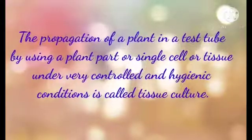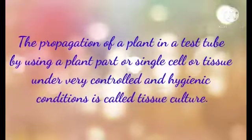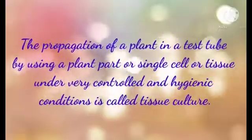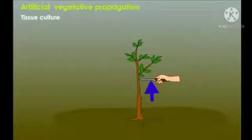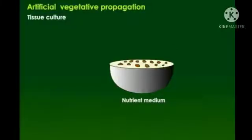Tissue culture is a modern method of vegetative propagation. Let us understand the steps in this process. First, cut a piece of tissue from a desired plant, and then keep it in a nutrient medium under controlled conditions. This tissue grows into a mass of cells called callus.